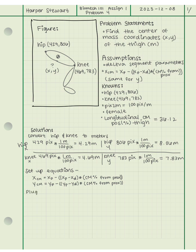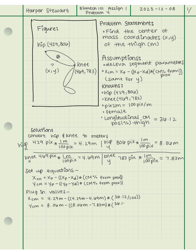Now that we have our equation set up, we're ready to plug in our values. For our proximal x coordinate we have 4.29 meters, and for our distal x coordinate we have 4.69 meters. We're going to use 36.12 from the de Leva table, remembering to divide by 100 so it becomes a decimal. For our y coordinates, 8.06 meters is the proximal coordinate from the hip, and 7.83 meters is the distal coordinate from the knee, again using 36.12 divided by 100.